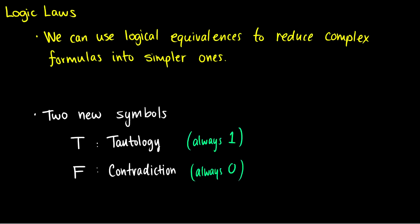Last time we did proofs using truth tables. Now I want to introduce logic laws, which show a bunch of really useful logical equivalences that we can use to reduce complex formulas into simpler ones. I'm going to define T as a tautology — capital T will always mean a formula that outputs ones, and capital F will always be a formula that always outputs zeros.